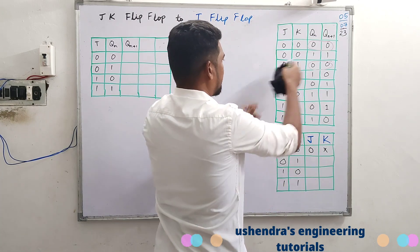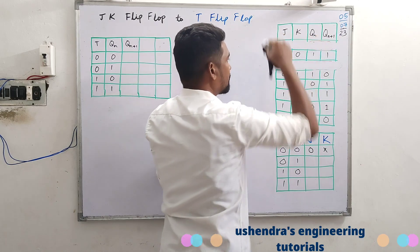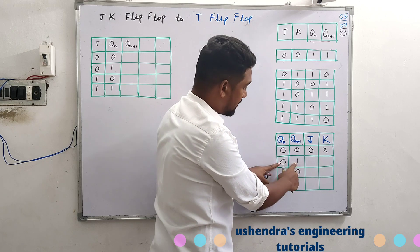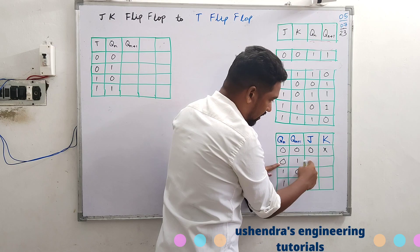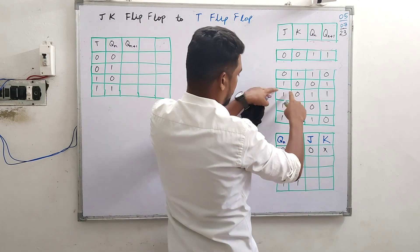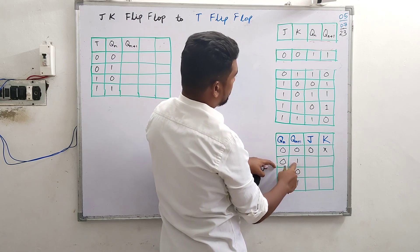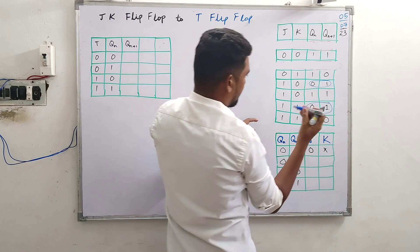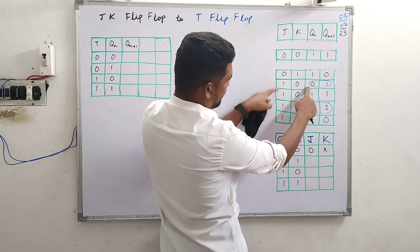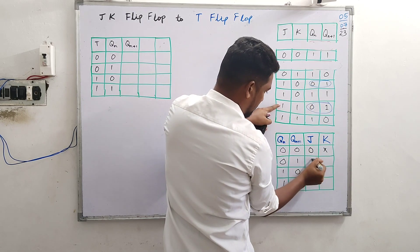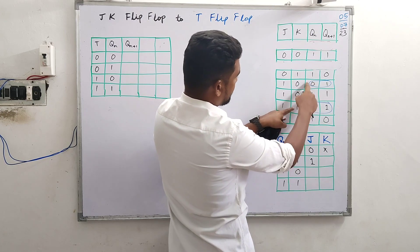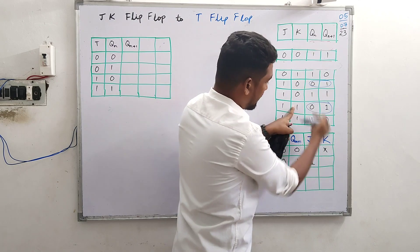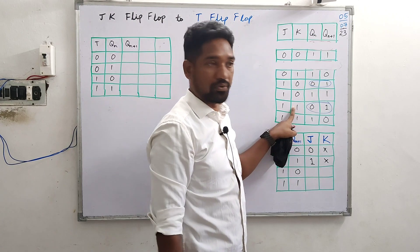We are done with the zero-zero combination for the excitation table. Next, present state is zero and the next state should go to one after the clock pulse — what JK input is needed? For the zero-one combination, looking at all possible cases: in both cases J equals one, so straightaway J=1. For K, it may be zero or it may be one, so in digital electronics that's a don't care.